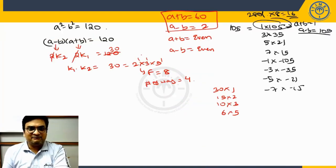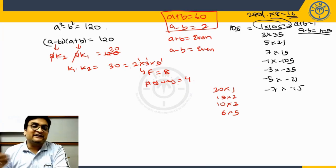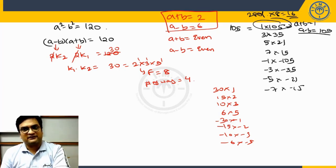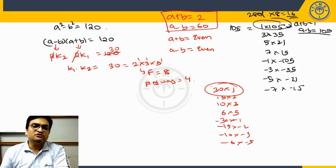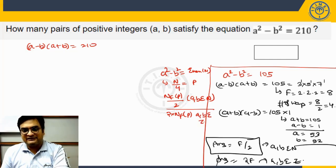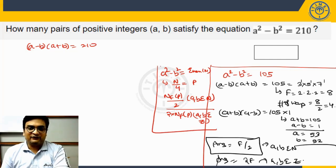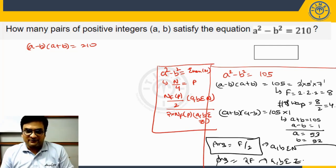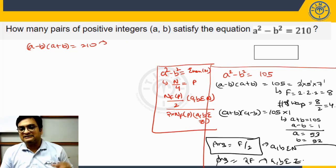If a and b are integers (not just positive), we also include negative factor pairs: (-30)×(-1), (-15)×(-2), (-10)×(-3), (-6)×(-5). Now there are 8 pairs total, and each pair gives 2 solutions, giving 16 solutions overall. The answer in this case is 2 × f(p) — double the number of factors of p = n/4.